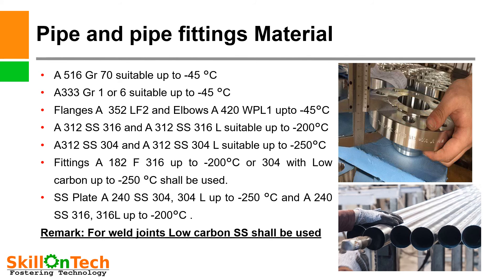Pipe and pipe fitting materials. Generally in industries, pipe and pipe fitting materials are used for low temperature service where temperatures are –45°C, –200°C, or –250°C. The suitable materials are given in this slide: A516 grade 70 carbon steel plate is suitable up to –45°C; A333 grade 1 or grade 6 pipe is suitable up to –45°C. A picture of a pipe and a picture of a flange are also shown. Flanges A350 LF2 and elbows A420 WPL1 grade shall be used.